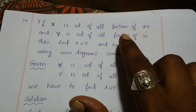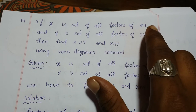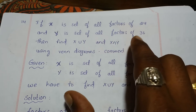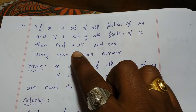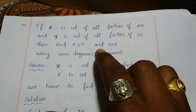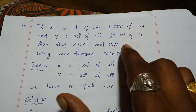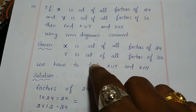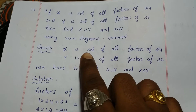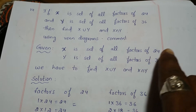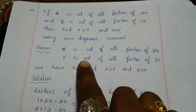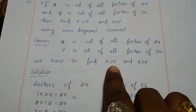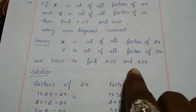If X is a set of all factors of 24 and Y is a set of all factors of 36, then find X union Y and X intersection Y using one diagram. Given: X is a set of all factors of 24, Y is a set of all factors of 36. We have to find X union Y and X intersection Y.